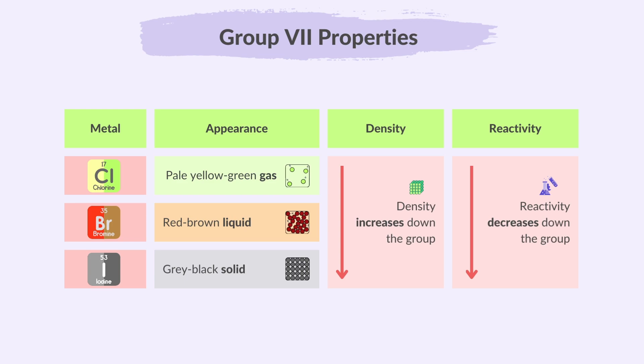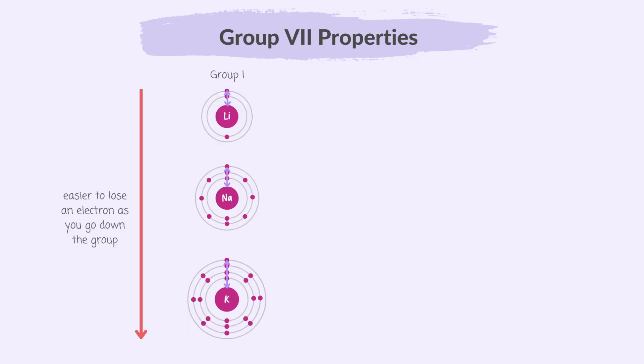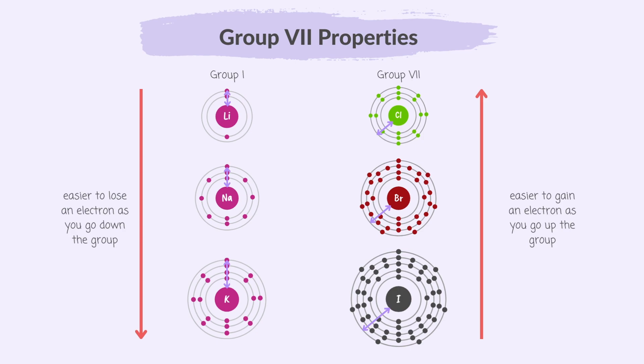The reactivity of group 7 non-metals decreases as you go down the group — this trend is the opposite to group 1's reactivity trend. In group 1 elements, as you go down the group, the positive nucleus attracts the outer electron less strongly, making it easier for the element to lose its single outer electron, so reactivity increases. In contrast, for group 7 elements at the top of the group, the positive nucleus attracts electrons more strongly, making it easier to gain an electron, so reactivity is higher up the group.